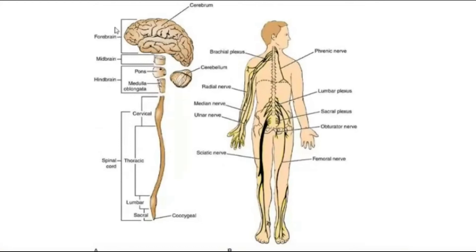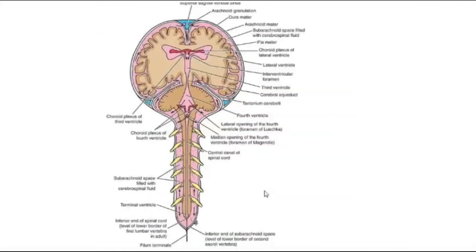Here is another diagram of the central nervous system. You can see the cerebral hemispheres and the brain stem with its different parts, as well as the spinal cord. This diagram basically shows how the brain and spinal cord are suspended within the skull cavity and the vertebral column.